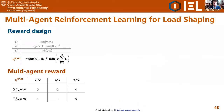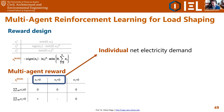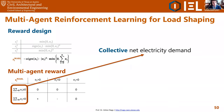I redesigned the reward function to include not only a greedy single-agent component but also a collective component. The individual component is the net electricity consumption of the specific building, and I added the collective net electricity demand of the whole district. I multiplied the individual electricity demand of the specific building by the electricity demand of the whole neighborhood, so every agent now tries to minimize both its own peak and the peak of electricity consumption of the whole district.